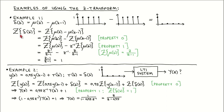We can therefore calculate the Z-Transform of an impulse as the Z-Transform of the difference between unit steps. From property 0, we write this as the difference of the Z-Transforms of unit steps. We then use property 1 to write that the Z-Transform of a unit step delayed by one time step is Z to the power minus 1 times the Z-Transform of an unshifted unit step. We use the entry in the Z-Transform tables for the unit step, and after some manipulations, we get an answer of 1, which matches the Z-Transform tables.